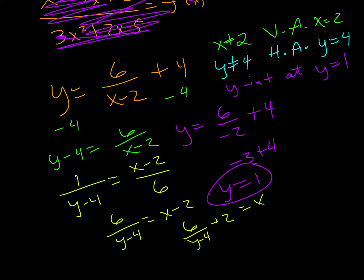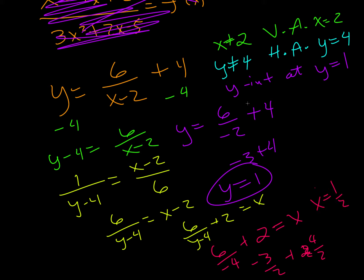Now, if I use the yellow one and plug in 0 for y, I get 6 over negative 4 plus 2 equals x. And so that's going to be negative 3 halves plus 2. If I get a common denominator, 2 would be 4 halves. And so x equals 1 half. We get an x-intercept at x equals 1 half.